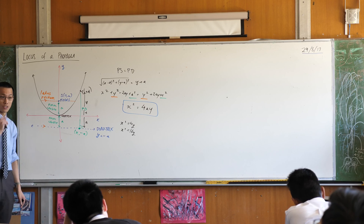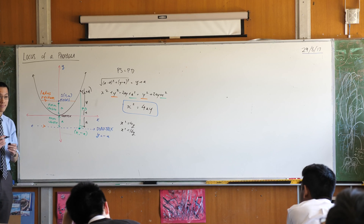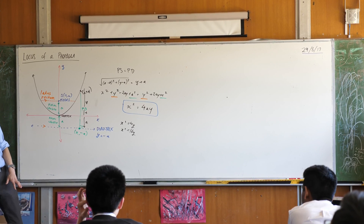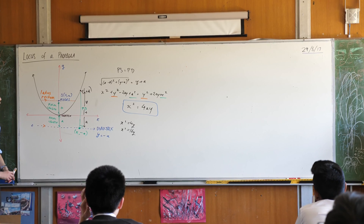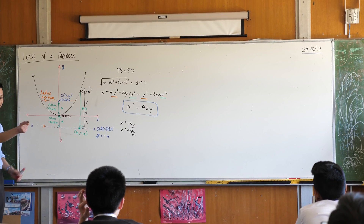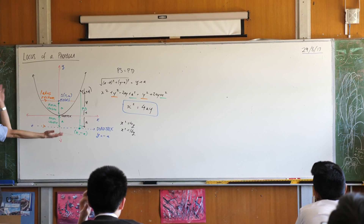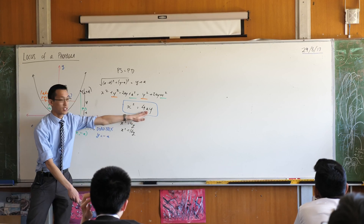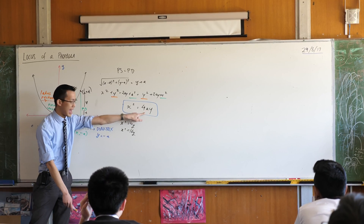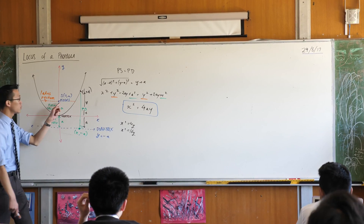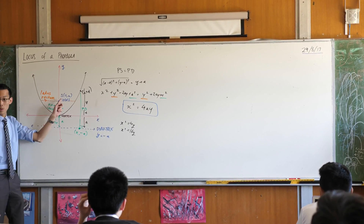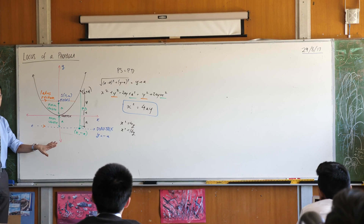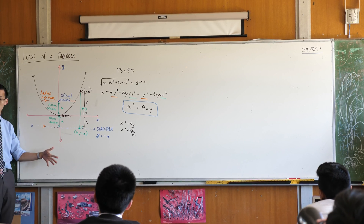Question: for the parabola y equals x squared, a would be a quarter? Yes — for the standard parabola y equals x squared, to get just a y on the right-hand side, a would have to be a quarter. So its focus would be at (0, one-quarter) and its directrix would be y equals negative one-quarter.